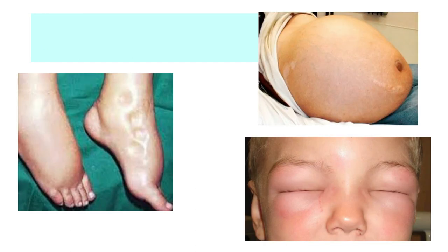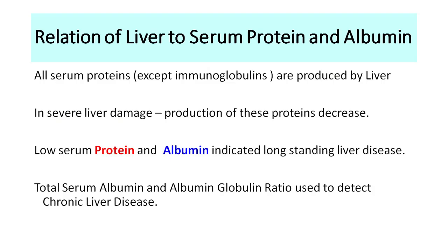When protein or albumin levels in the blood decrease, the ability to hold fluids within blood vessels decreases and fluids escape outside. When fluid escapes into the legs it is called pedal edema — if you press the legs you will find pitting. When fluid accumulates in the abdomen it is called ascites, and it can also accumulate in the face causing puffiness. All these are signs and symptoms that total protein in the blood is low.